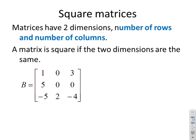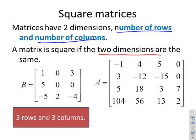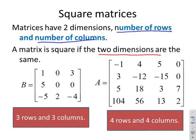Square matrices: matrices have two dimensions — the number of rows and the number of columns. For a matrix to be square, the two dimensions have to be the same, meaning the same number of rows as columns. Here B has three rows and three columns, so it's square. A has four rows and four columns, so it is also square.